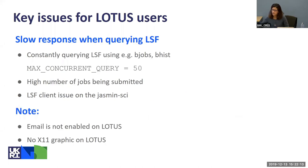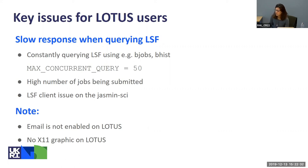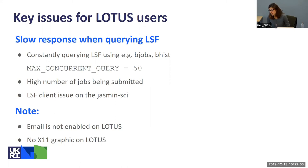Constantly querying LSF with bjobs or bsub can put a constraint on LSF — it's configured with a maximum of 50 concurrent queries at one time. Submitting a large job array of 10,000 without a percentage job slot limit will flood LSF, making it busy with your submission and ignoring queries from other users. Also note: there is no email notification enabled on Lotus and no X11 graphics on Lotus.